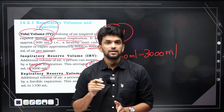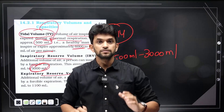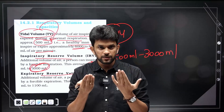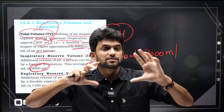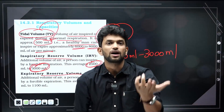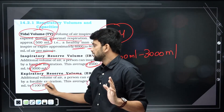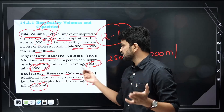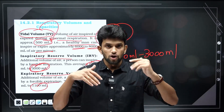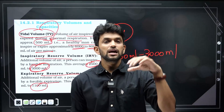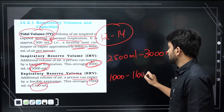Expiratory Reserve Volume: after normal expiration, the additional volume of air a person can expire by forcible expiration. That value is 1,000 to 1,100 ml.